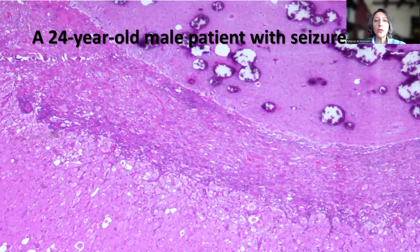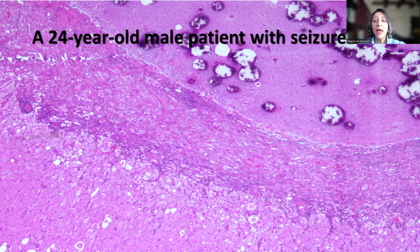This is a 24-year-old male patient who presented with seizure and was found to have a space-occupying lesion in the temporal lobe, for which he underwent resection. As you can see from the low-power magnification, there are areas of coarse calcification, which were actually identified on imaging, in particular on the CT scan.